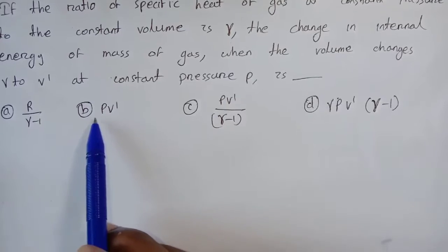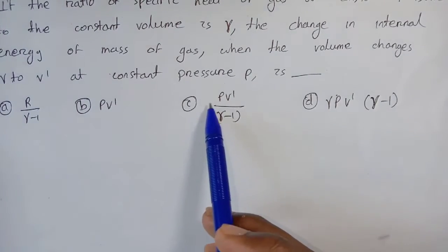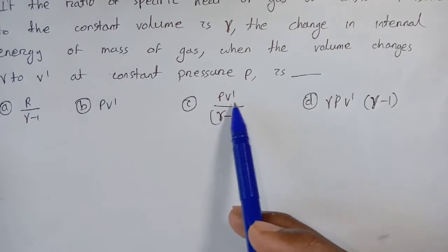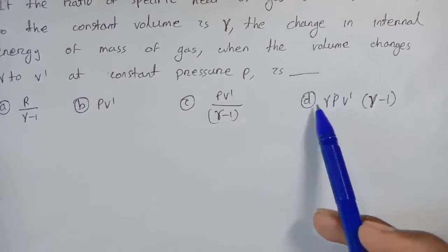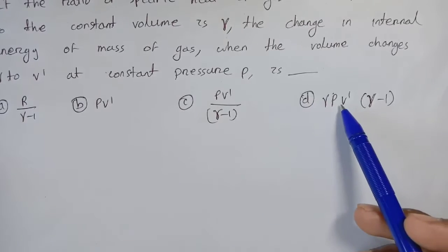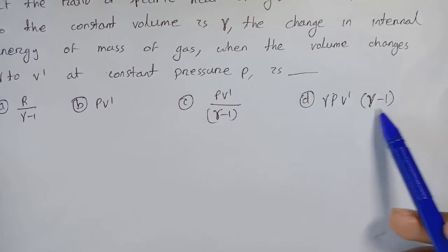Option A: R divided by gamma minus 1. Option B: PV'. Option C: PV' by gamma minus 1. Option D: gamma PV' divided by (gamma minus 1).